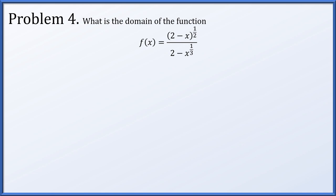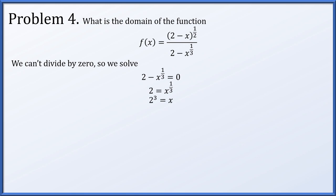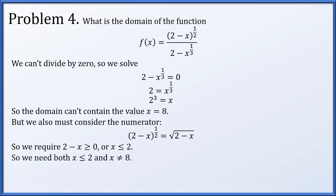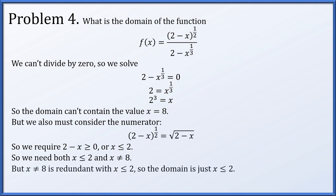Next, what's the domain of f(x) = (2 - x)^(1/2) / (2 - x^(1/3))? We can't have the denominator equal to 0. Setting it to 0 and solving — moving x over and raising both sides to the third power — shows x = 8 is excluded. But there's another restriction: the numerator is a square root, so 2 - x must be ≥ 0, giving x ≤ 2. The restriction x ≠ 8 is redundant since x ≤ 2 already excludes it, so the domain is x ≤ 2.